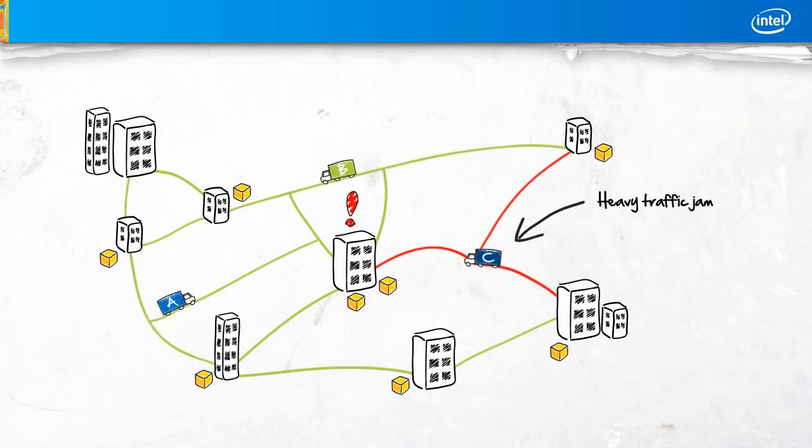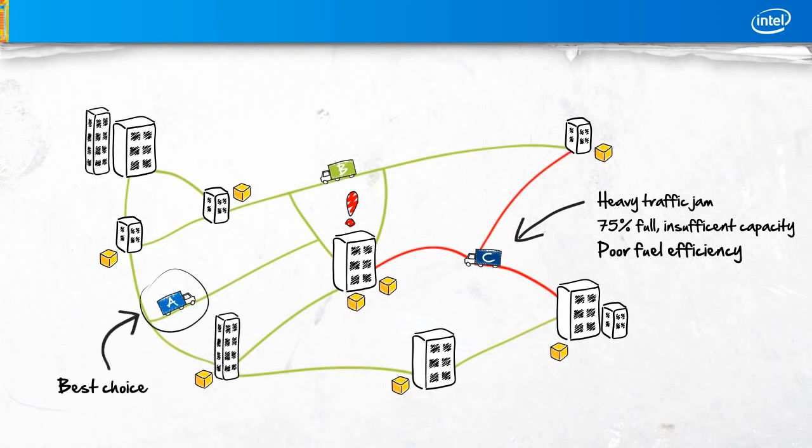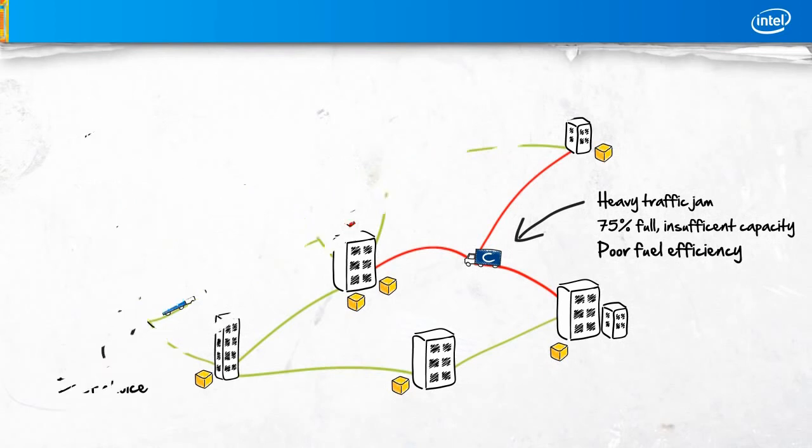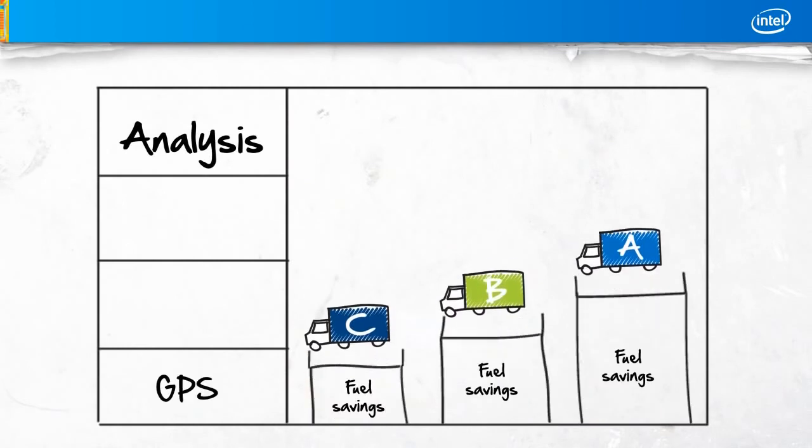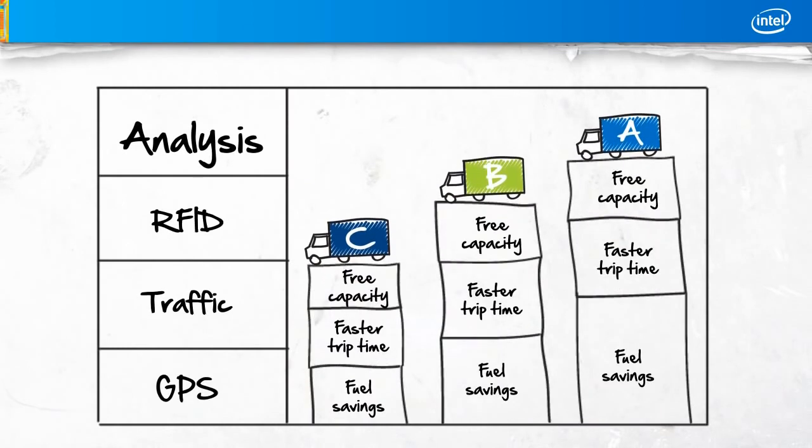What if the route for the closest truck has a heavy traffic jam? Or what if the cargo loaded on that truck doesn't allow space for the new pickup? Or maybe the route for that truck involves a series of steep grade changes. In those cases, the closest choice may not be the best choice. It might be more costly, less efficient, or unable to even service the customer's needs.